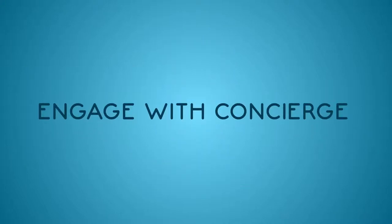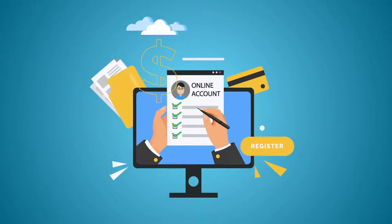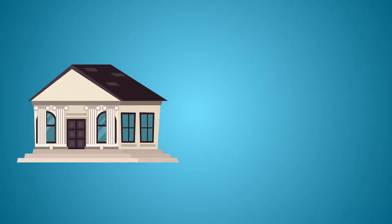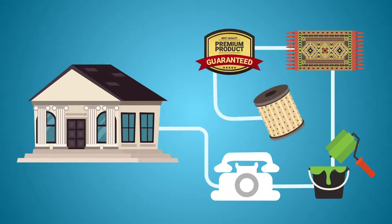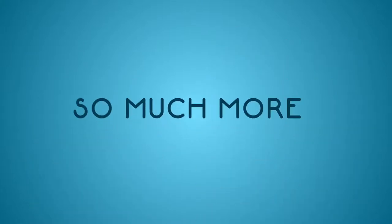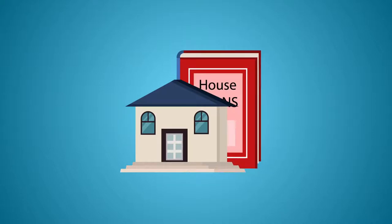Once you engage with the concierge, they will create your online account, which is an incredible place to store all of your home's information, including vendor contact information, paint colors, carpet types, appliance numbers, air filters, warranty information, and so much more. It becomes kind of like a Carfax for your house.